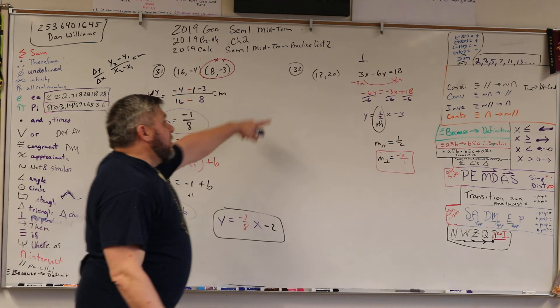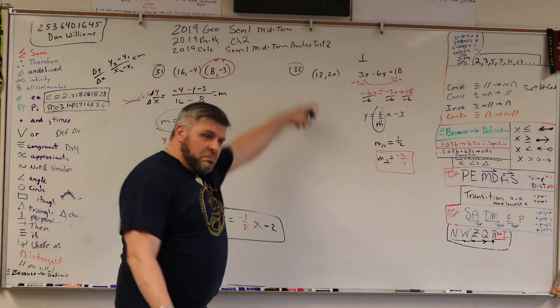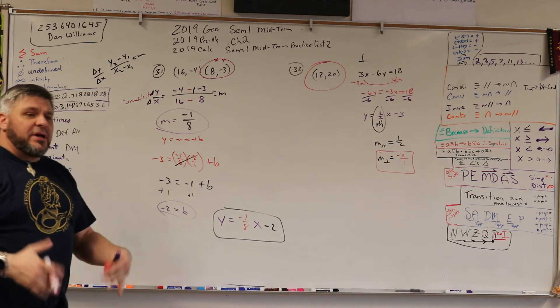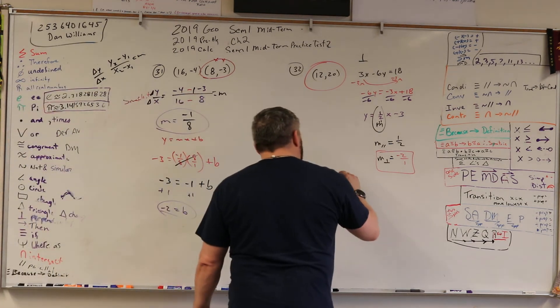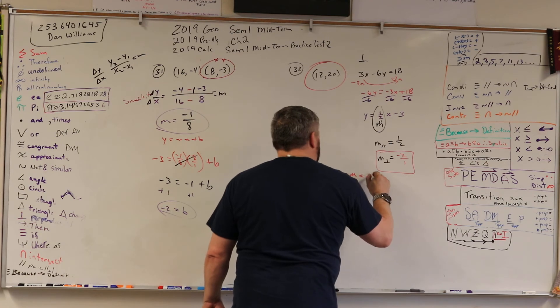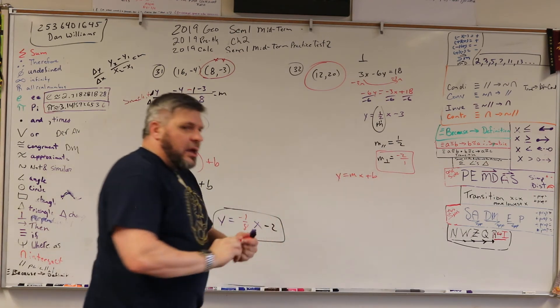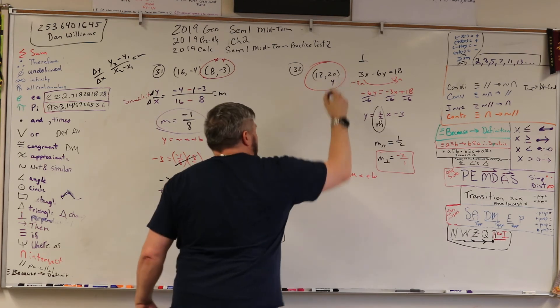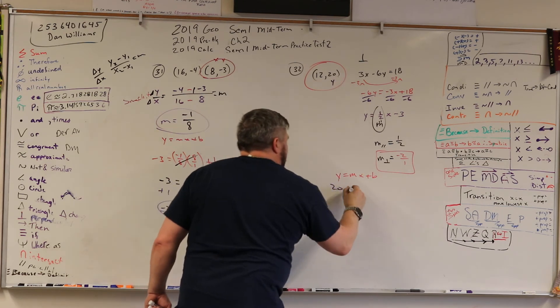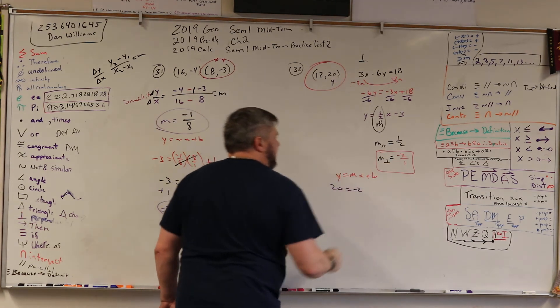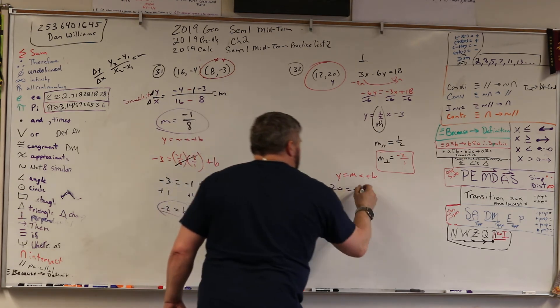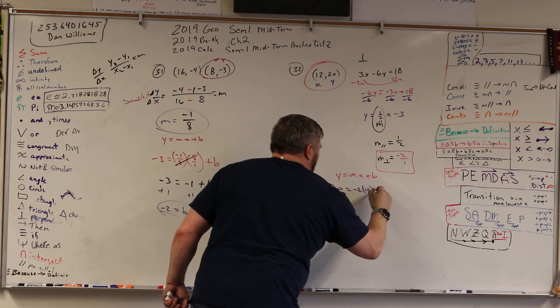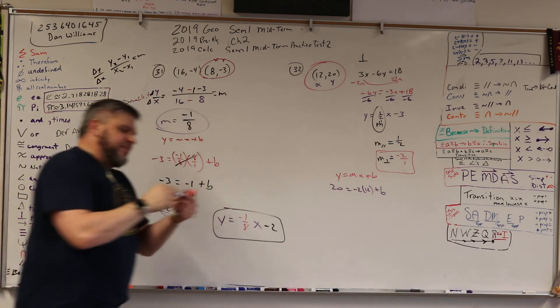Now, I want to go through this point. So I'm going to circle that, and I'm going to plug it into my equation. What equation? The y equals mx plus b equation. So what's y? Oh, 20. What's m? Oh, negative 2. What's x? Oh, 12. And then b? Well, we're about to find out.